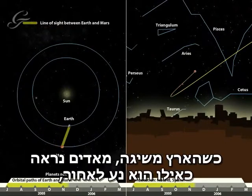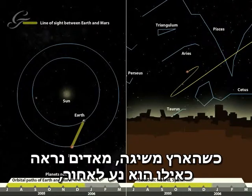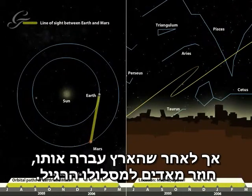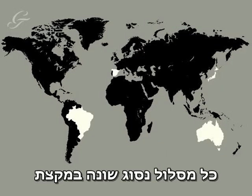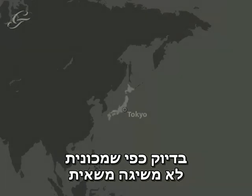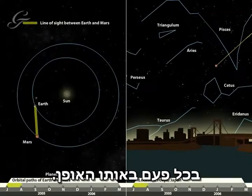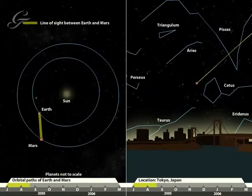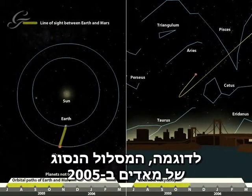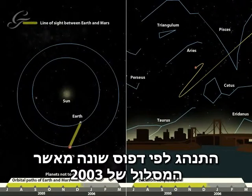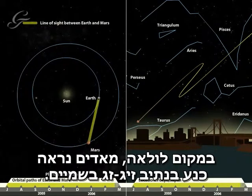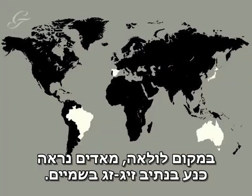As the Earth overtakes, Mars appears to move backwards, but once it is passed, Mars heads back to its usual path. Each retrograde orbit is slightly different, just as a car will never overtake a lorry in exactly the same way each time. For example, the Mars retrograde orbit of 2005 followed a slightly different pattern to the 2003 orbit. Instead of a loop, Mars seemed to trace a zigzag path in the sky.